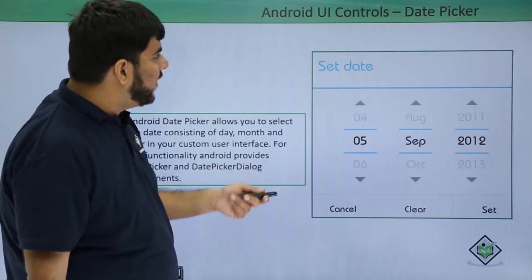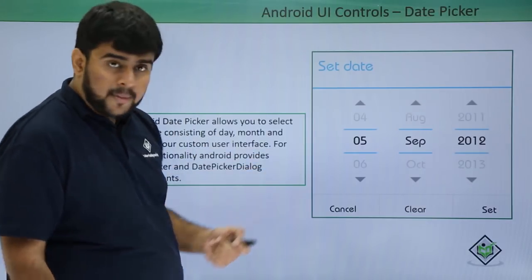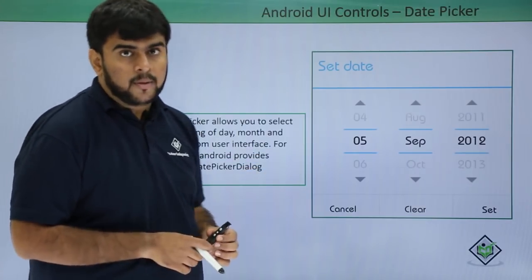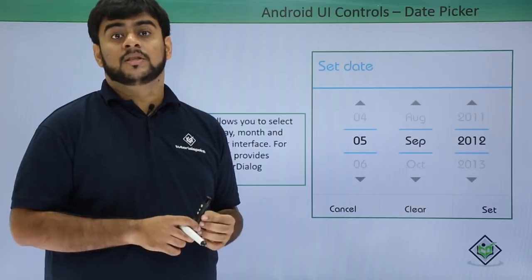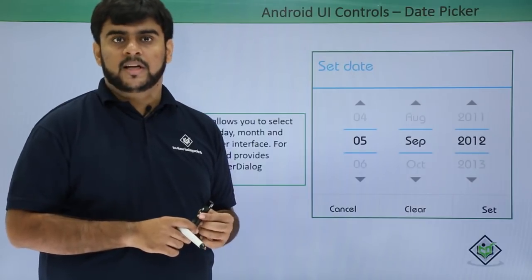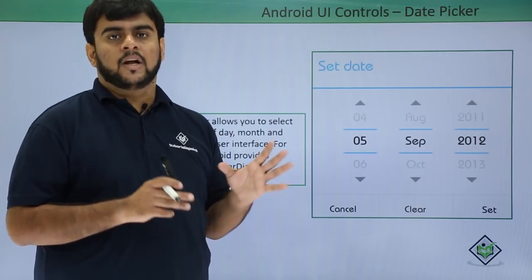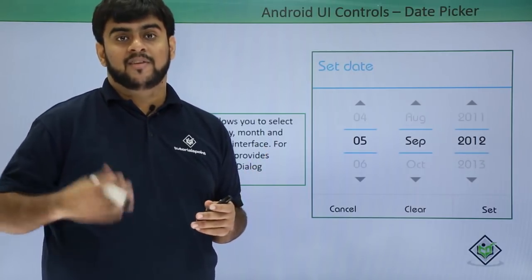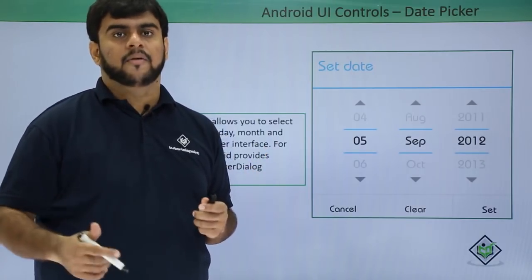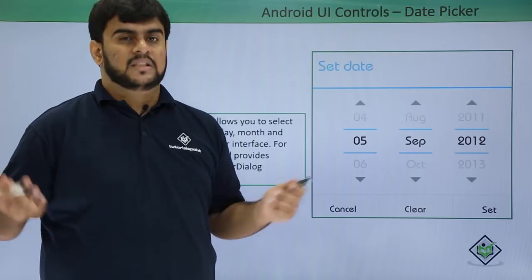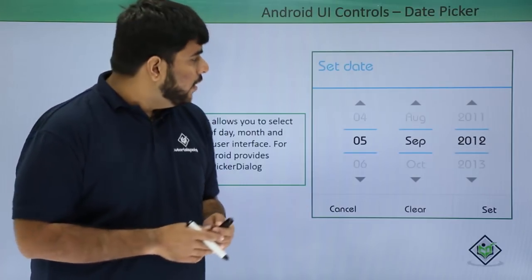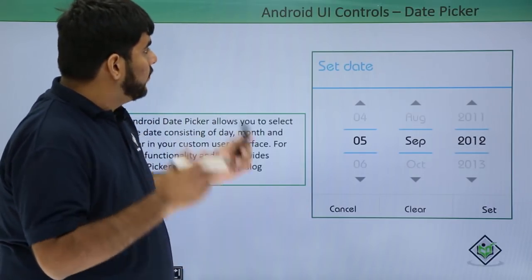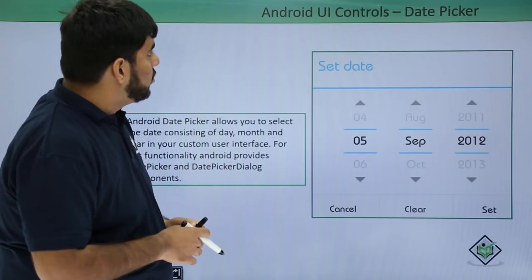We will be seeing the date picker using the dialog. If you remember, we have also seen the time picker using a dialog. A dialog is simply an overlay on the layout and we create it in our own Java file.